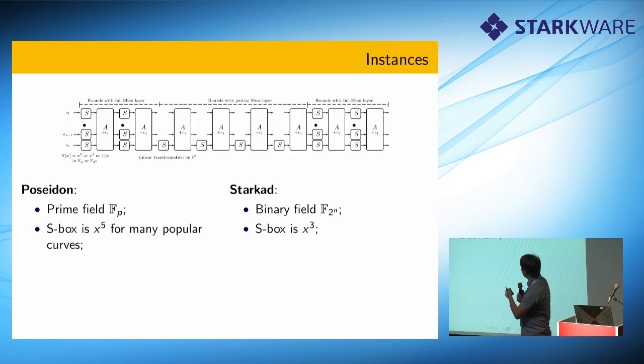The difference in real instances: in Poseidon, we work on the prime fields. The field is like 255 bits for 128-bit security. And S-box is X to the 5 for the most curves, for the most fields that arise from elliptic curves where we really need them. And in Starkad, the binary field, it's like 63-bit or 127-bit, depending on the architecture you plan to use, because in some architectures you can have fast binary field multiplications embedded. And S-box is just X to the 3.